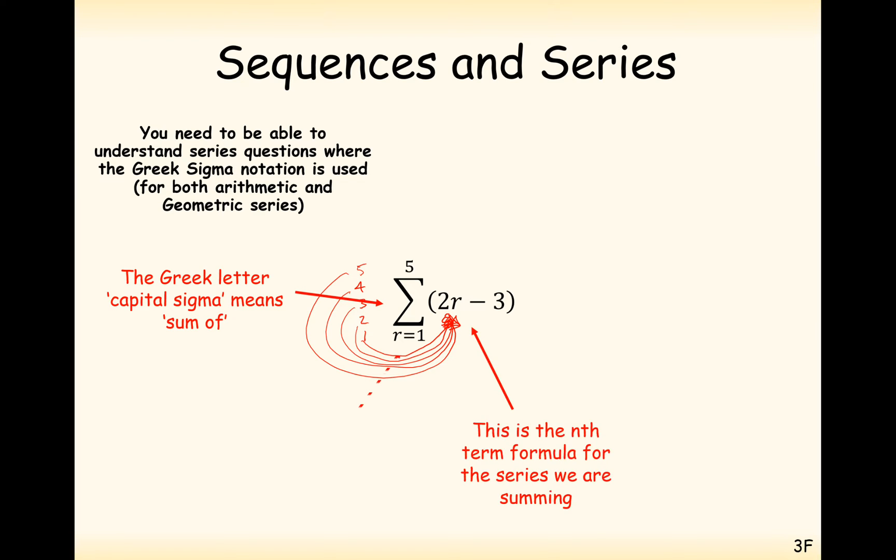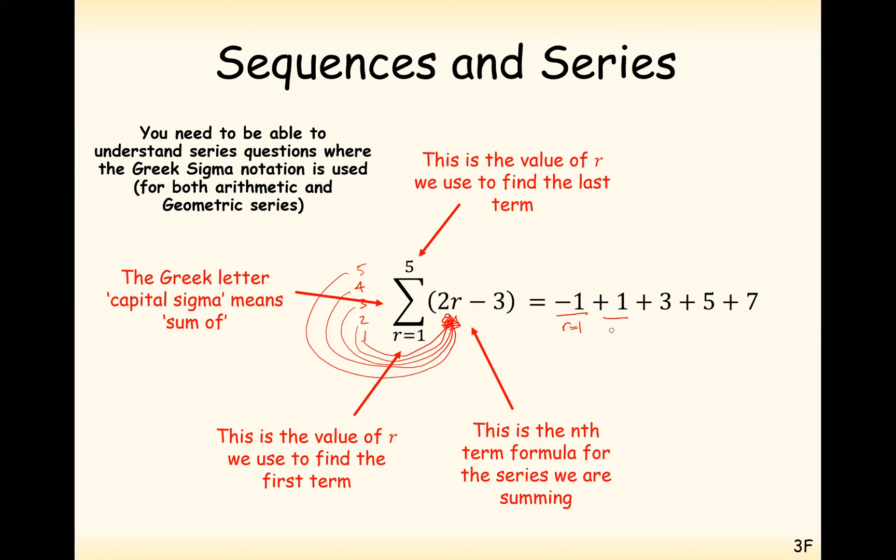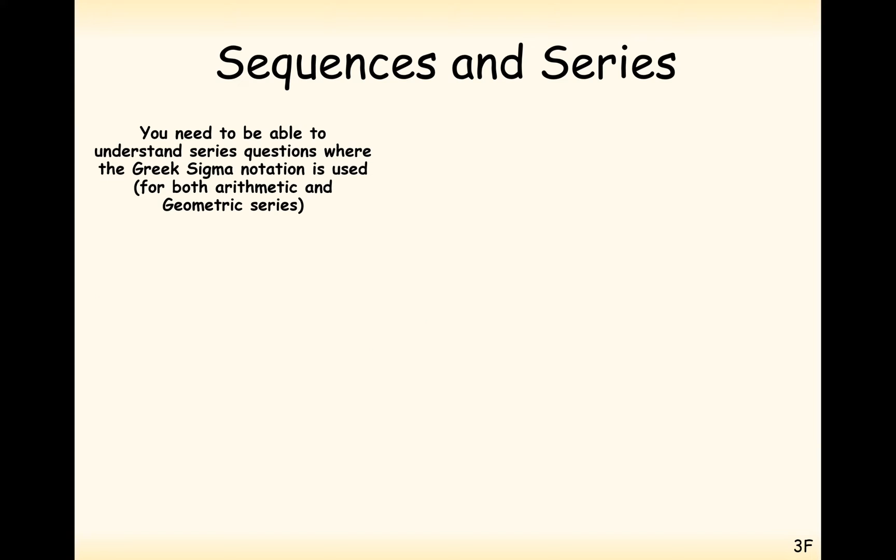So substituting in 1 first, you get 2 times 1, which is 2 minus 3 is minus 1. So this is effectively when r is equal to 1. You get 1 when you substitute in r equals 2. You get 3 when you substitute in r equals 3. You get 5 when you substitute in r equals 4. And you get 7 when you substitute in r equals 5. You then add all of these together and you get your answer. So that's how the sigma notation works.